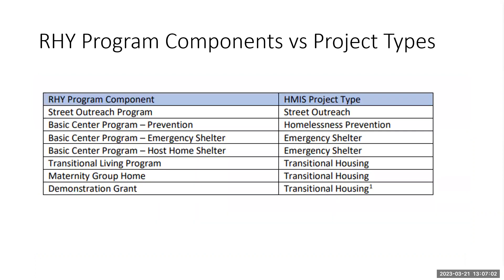Component types versus project types. You might be funded under a specific program component through RHY funding. However, there is also an HMIS project type that you were assigned that you're going to follow in regards to data elements for the universal data element portion. Street outreach program is a street outreach project type in the HMIS. If you're a basic center program prevention component, you're going to follow the homelessness prevention data elements and data collection.